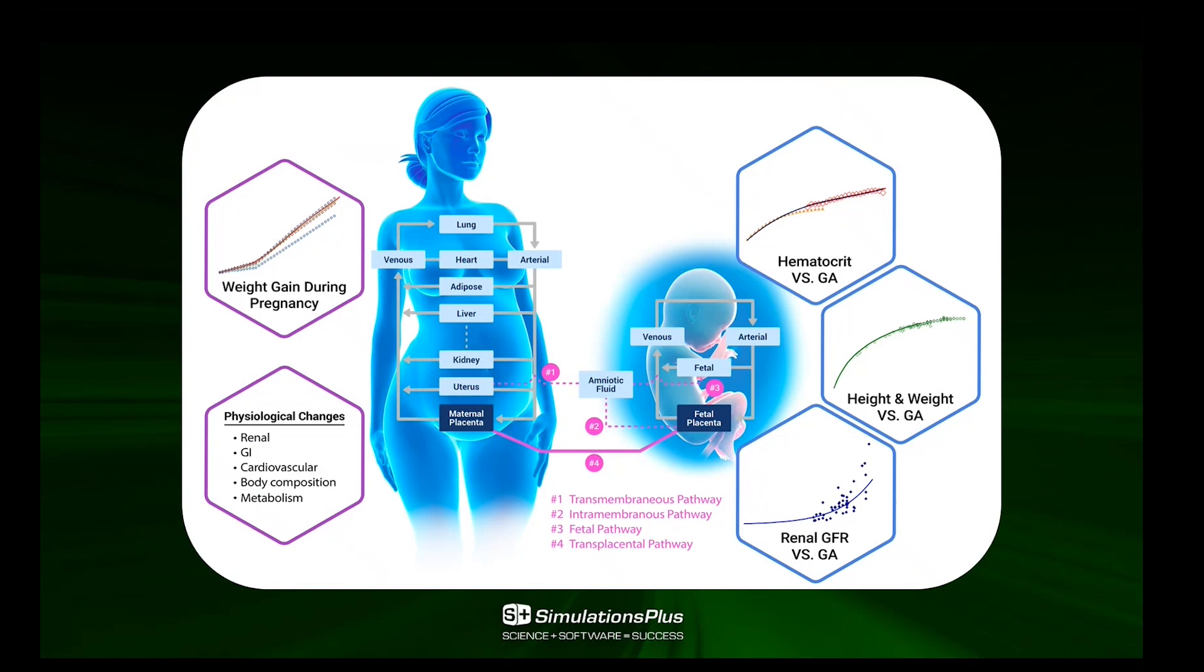At SimulationPlus, we developed a PBPK model able to predict both the maternal and the fetal PK at different times of pregnancy. On the left side of these figures, you can see the maternal PBPK models, which is similar to the typical PBPK structures that we have for healthy subjects, except this time we include two new tissues, the uterus and the maternal placenta.